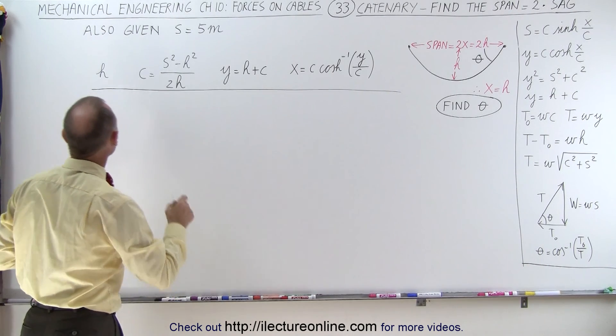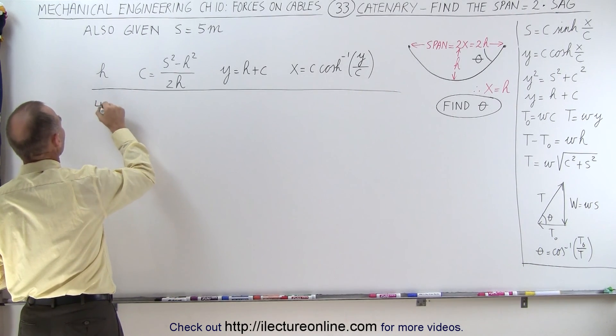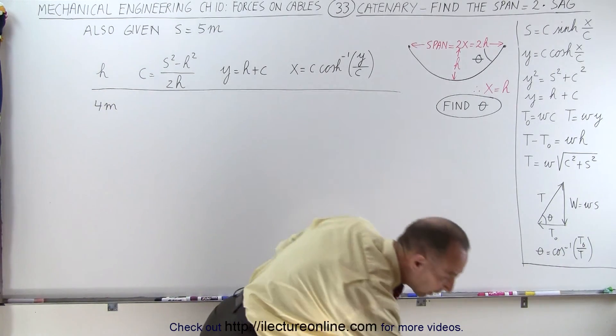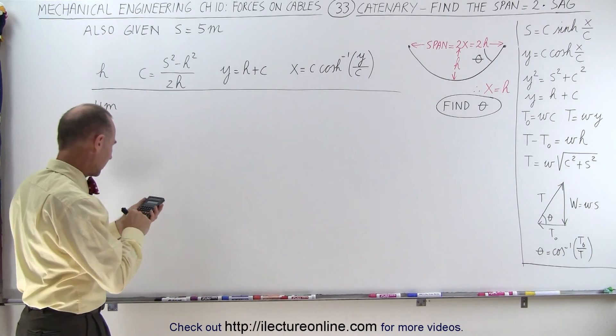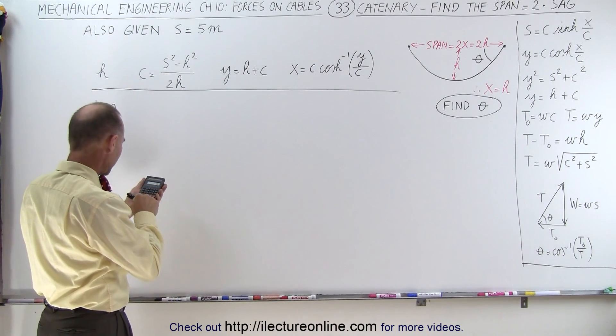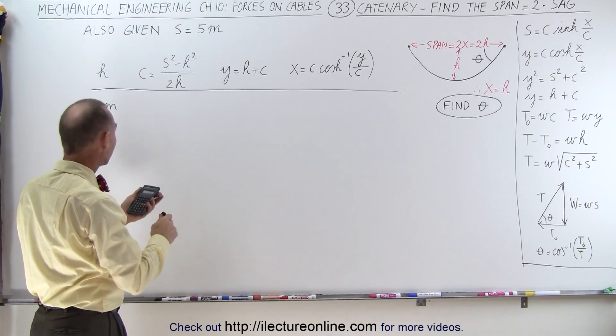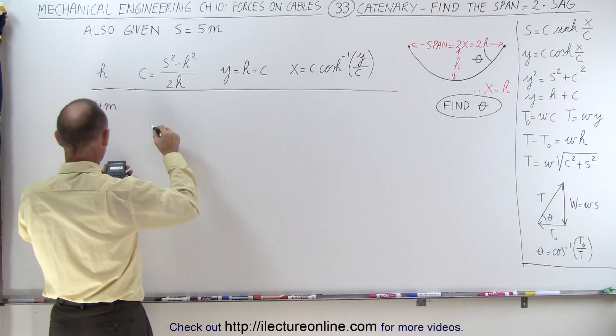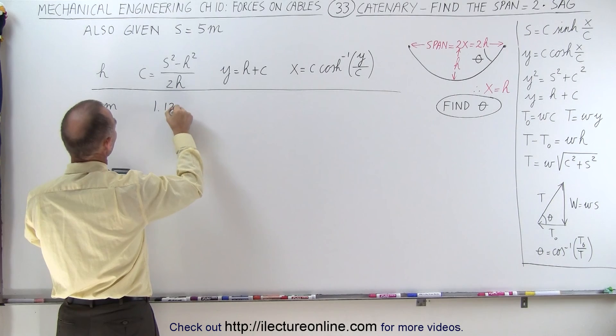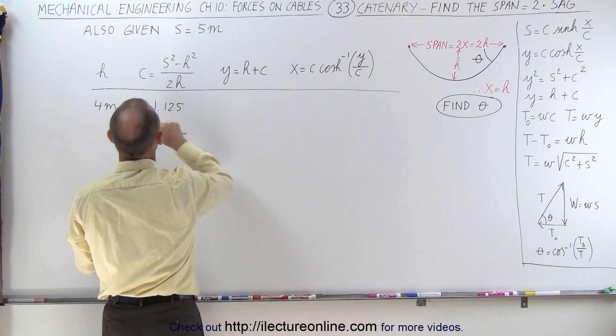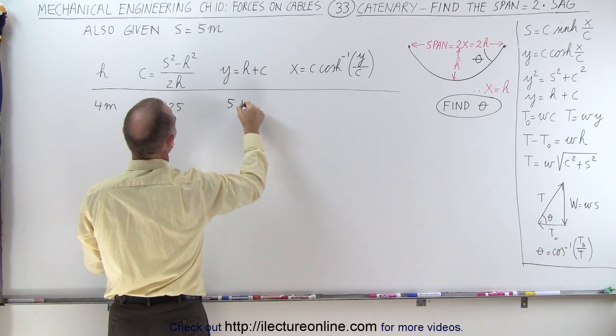So let's start with a value for h, let's make it equal to 4 meters. So we'll start with h being 4 meters, and we know that s is 5 meters, so that gives us 25 minus 16, divided by 2h, divided by 8, and so that becomes 1.125. In that case, y would be h plus c, the two added together, which is 5.125.